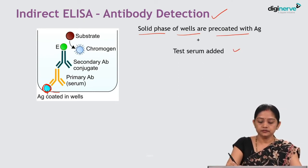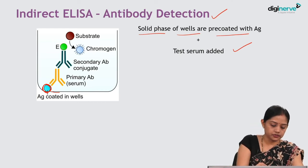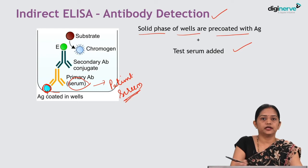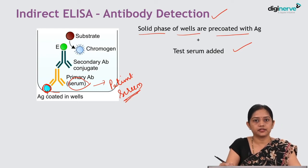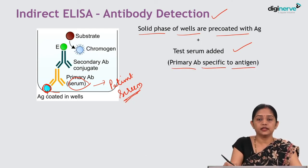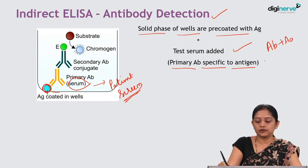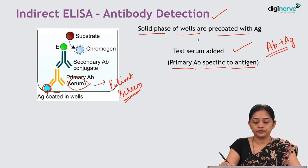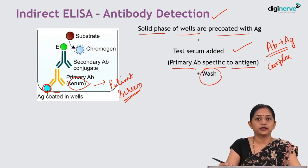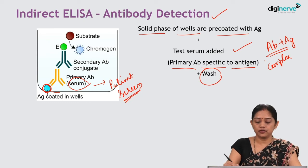The next step is addition of patient serum. If the patient serum contains antibody, that antibody is called the primary antibody. The primary antibody present in the patient serum will specifically bind to the pre-coated antigen on the microtiter well, forming an antigen-antibody complex. The next step is a wash step where any unbound antigen or antibody is washed away.